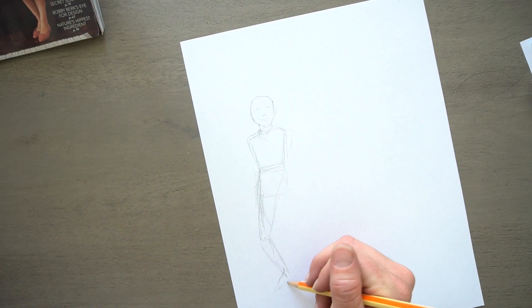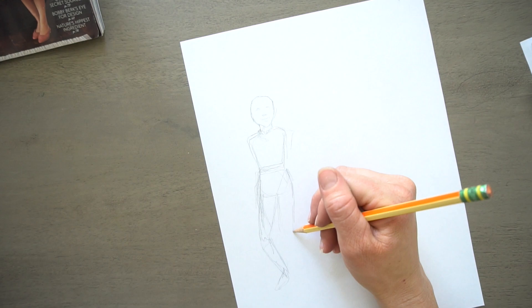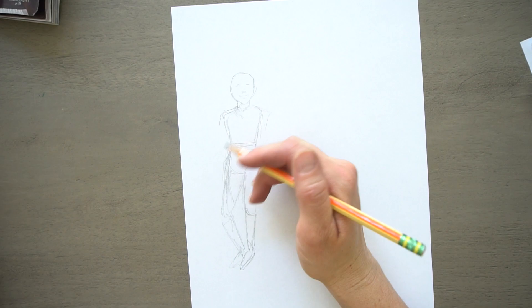But what you really want to do is wait, because you might have something off and you might need to fix it. So you want to draw the whole big to small. So the whole figure and then the parts. That is going to save you so much time when you're erasing.